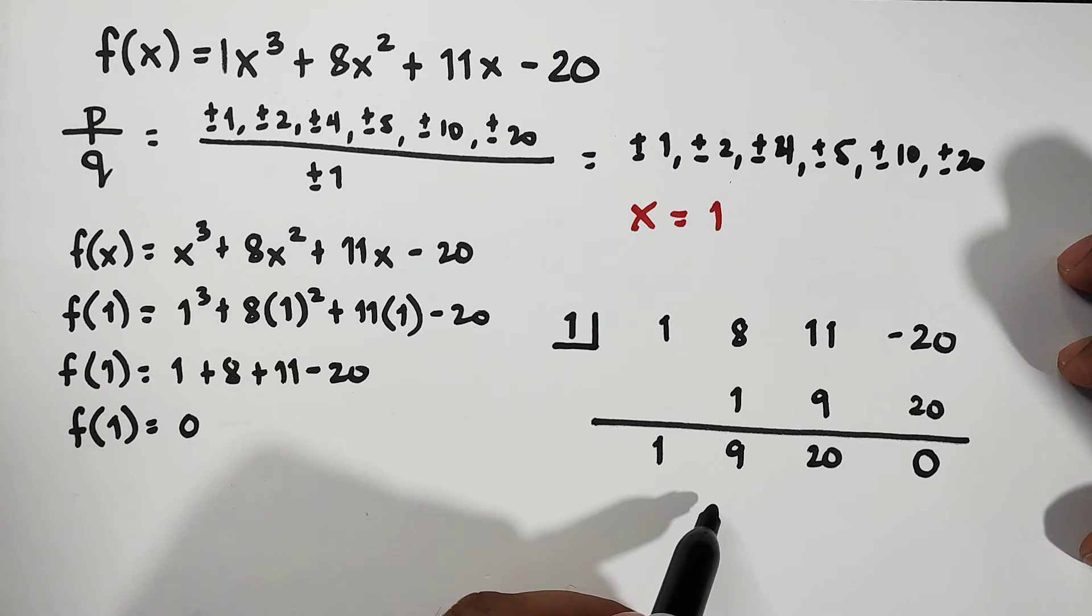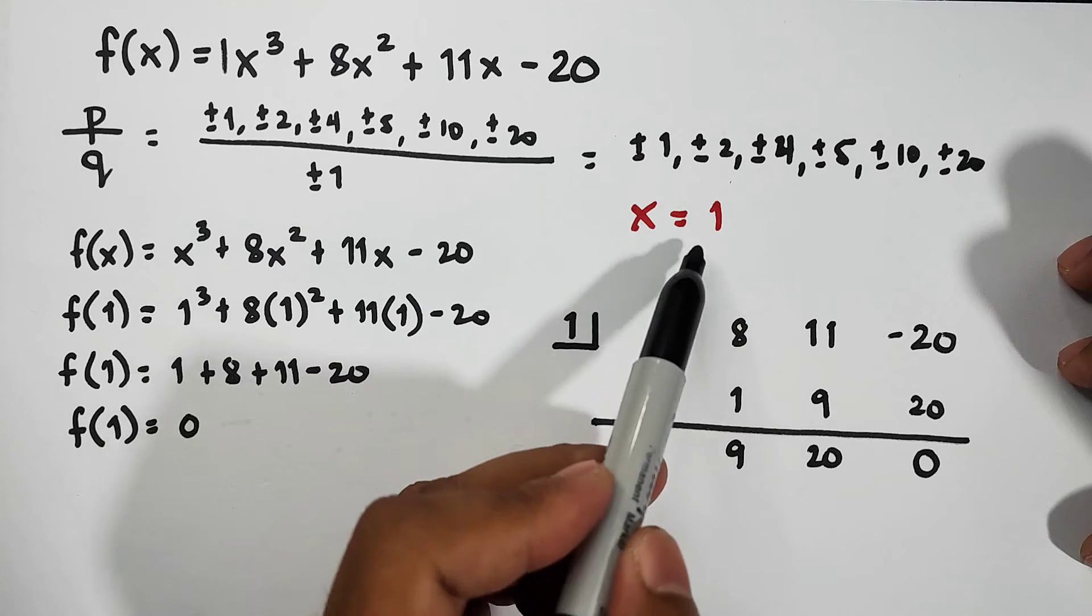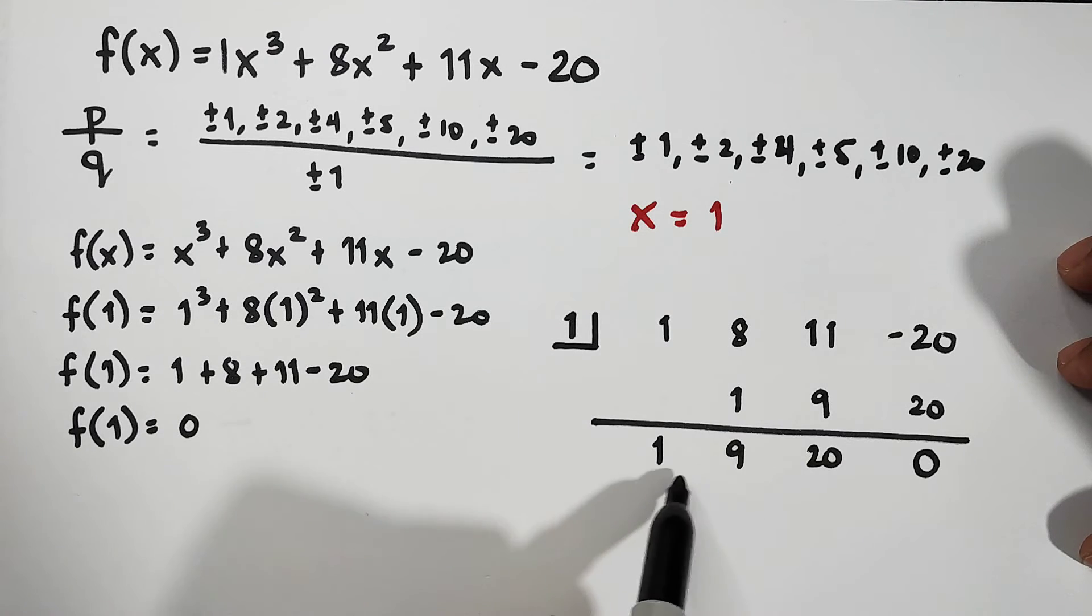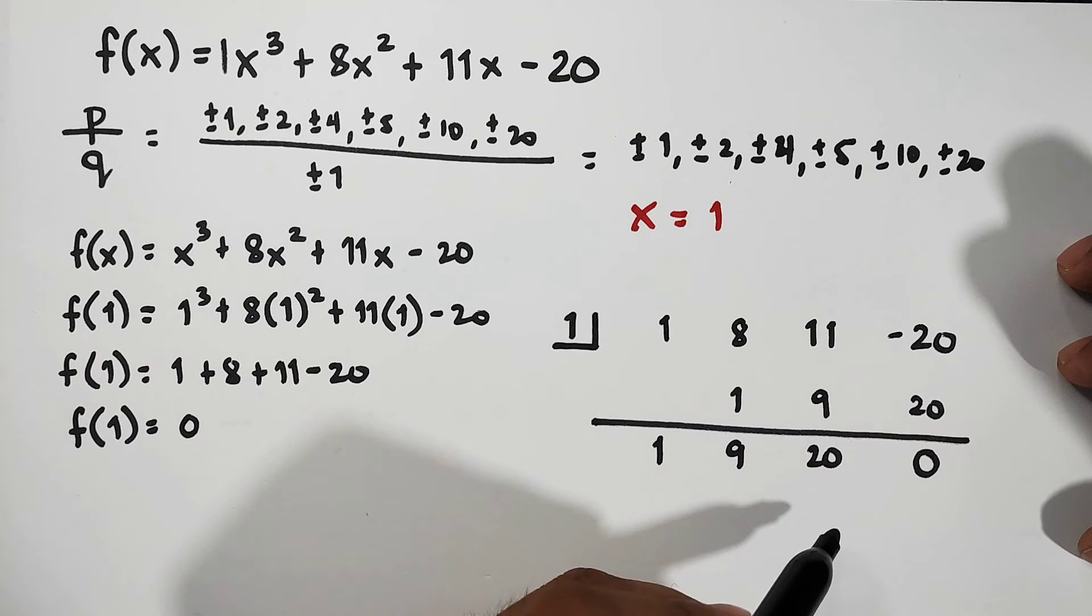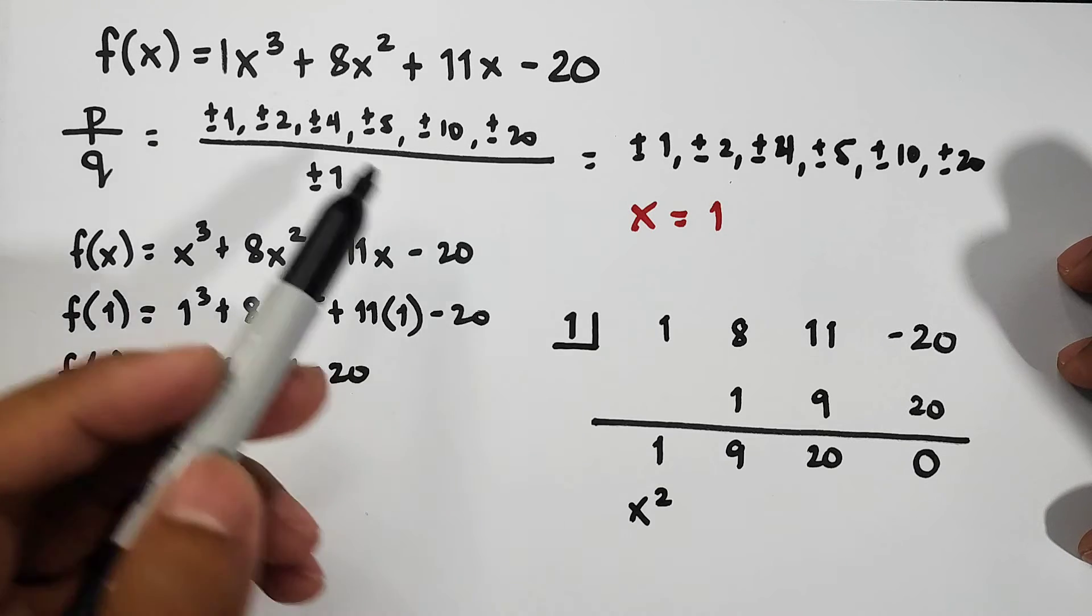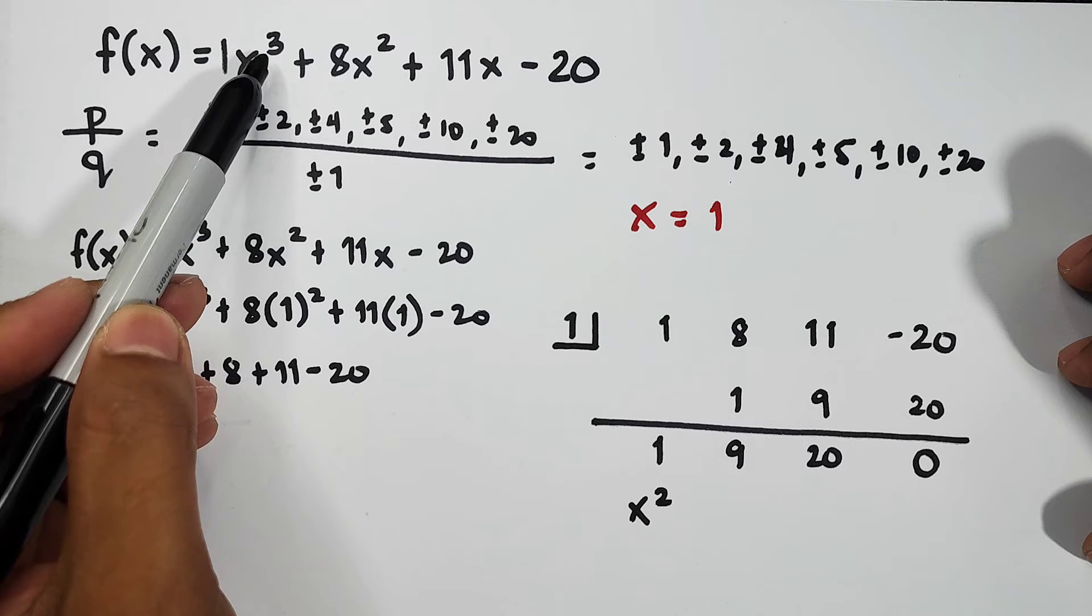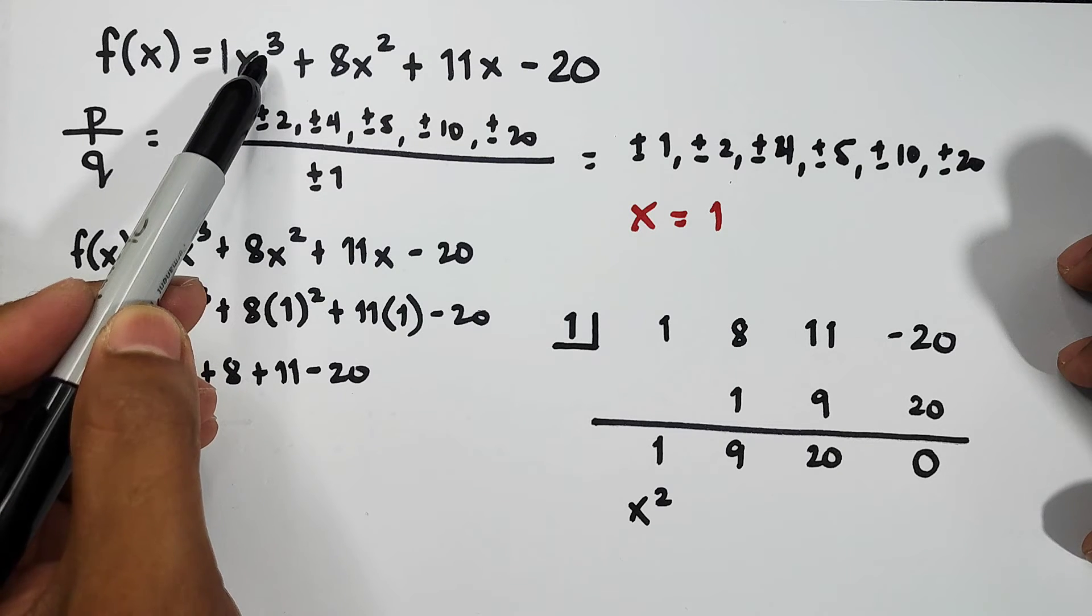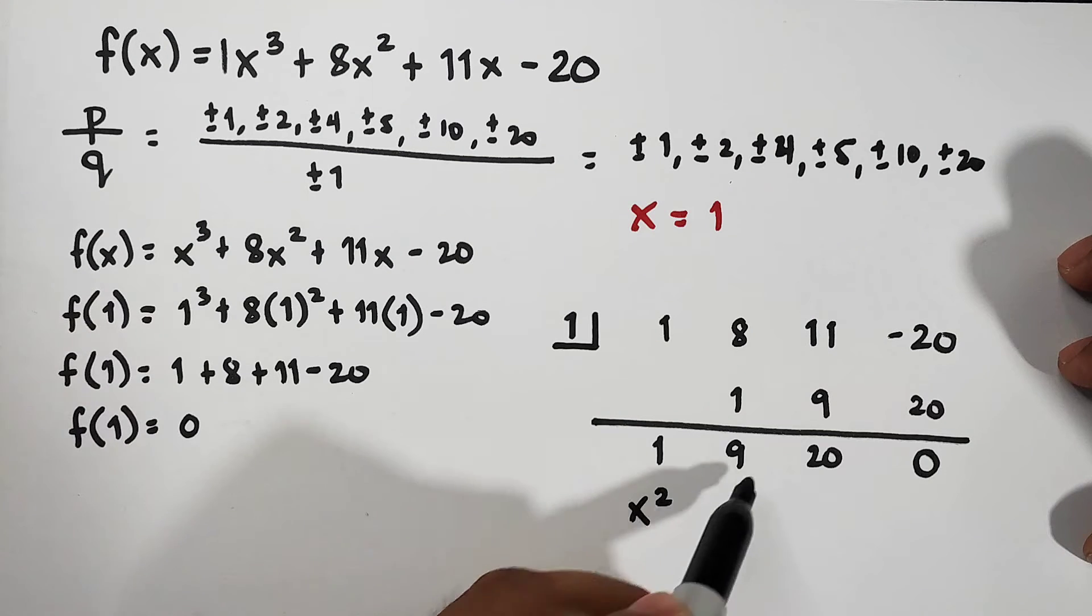This is proven. Since this is 0, automatically this one is one of the zeros. Now with what we got here: 1, 9, and 20, we will make it a function. This 1 will become x². The reason why is that when we do synthetic division to make this an expression or equation, you just need to subtract 1 from the degree. 3 minus 1 is 2, so that is x². This is plus 9x, and this is your constant 20.